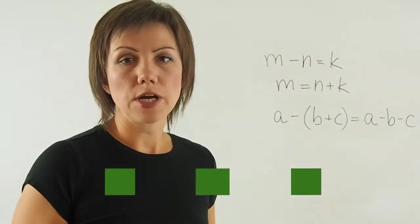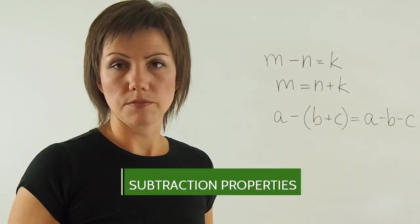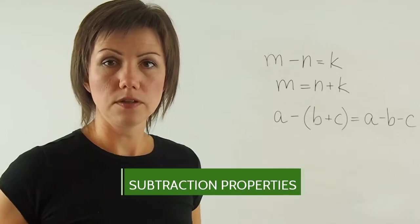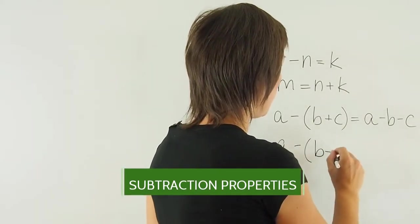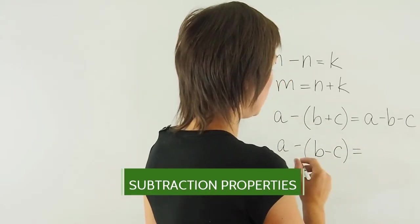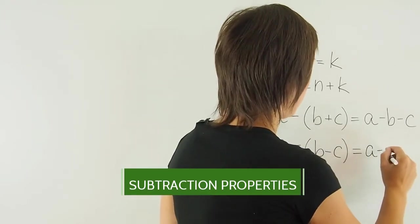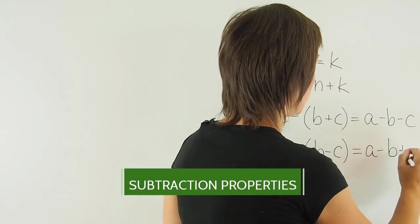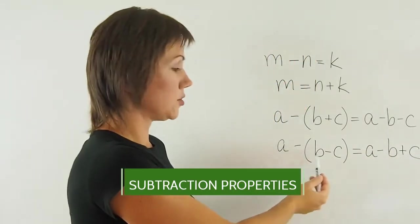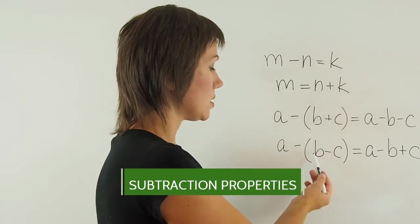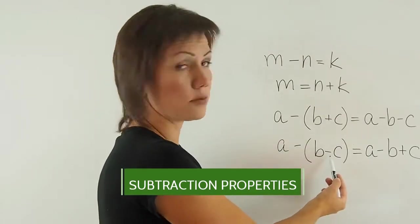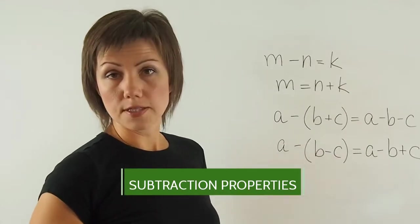If I'm subtracting the difference of two numbers from another number, here's what it looks like. A subtract b minus c equals a minus b plus c. So I'm changing each one of the signs in front of the numbers to the opposite. b was positive becomes negative. c was negative becomes positive.